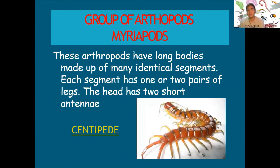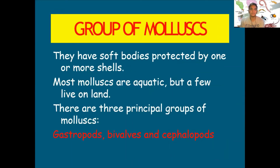Myriapods have long bodies made up of many identical segments — whenever you cut one, each part can still move. Each segment has one or two pairs of legs. One example is the centipede, which has hundreds of feet. Their head has two short antennae.